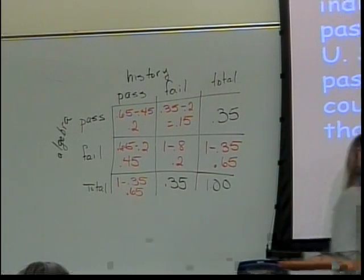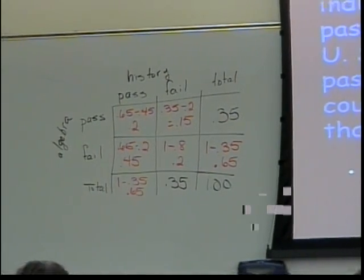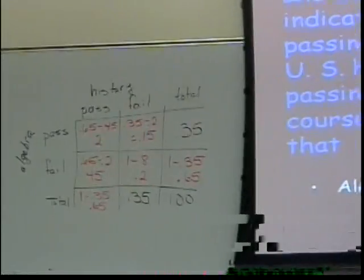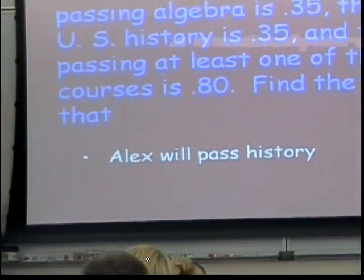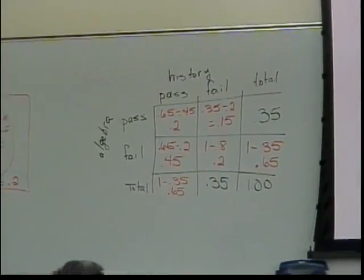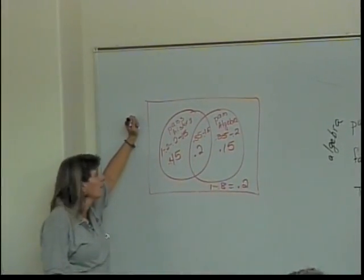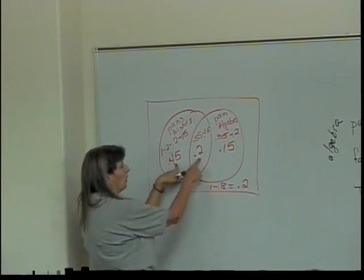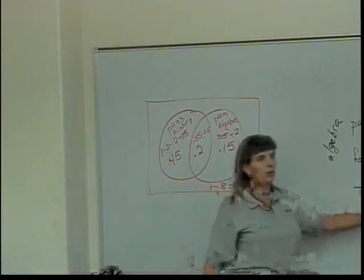Now, to answer the questions. What's the probability that Alex will pass history? Where is it in the table? Bottom left. 0.65. Where is it in the Venn diagram? A whole circle of passing history, so I need to add these two together. 0.45 and 0.2.